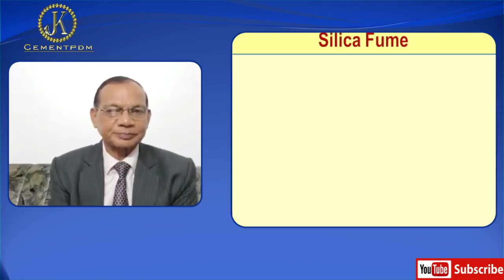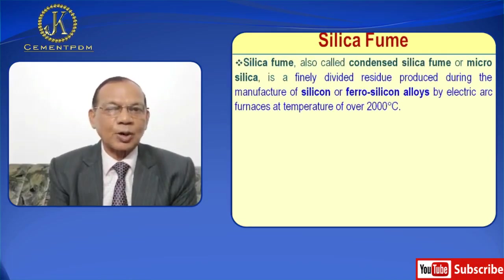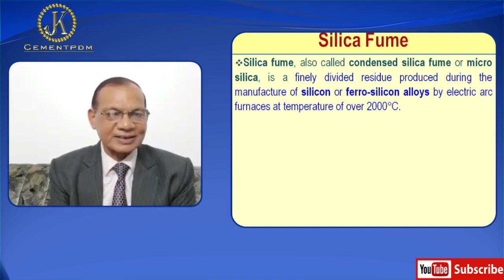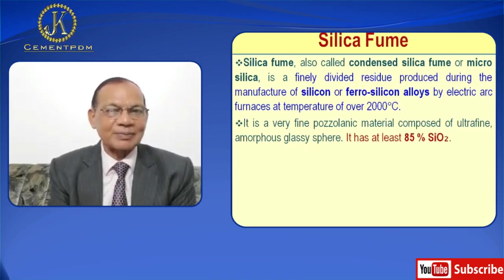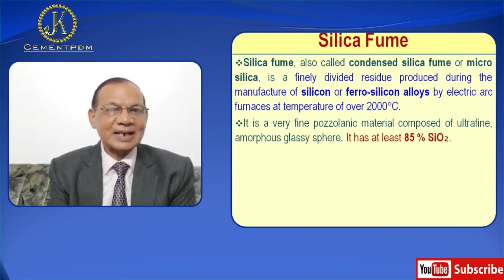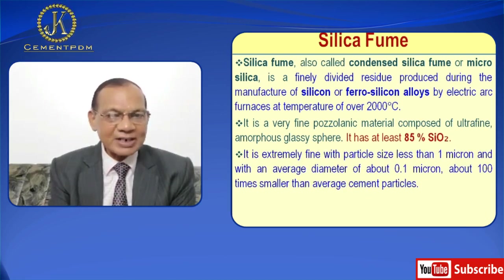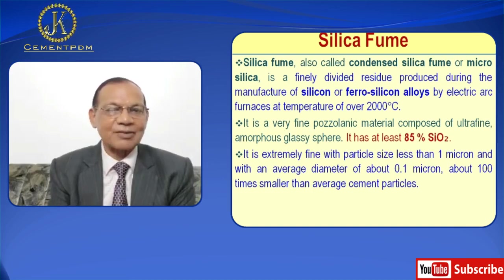Silica fume, also called condensed silica fume or micro silica, is a finely divided residue produced during the manufacture of silicon or ferrosilicon alloys by electric arc furnaces at temperatures of over 2000 degrees centigrade. It is a very fine pozzolanic material composed of ultrafine amorphous glass spheres. It has at least 85% silica content. It is extremely fine with particle size less than 1 micron and with an average diameter of about 0.1 micron.